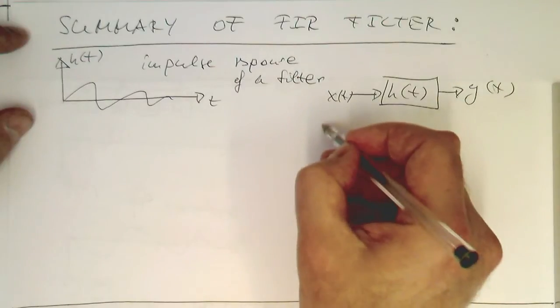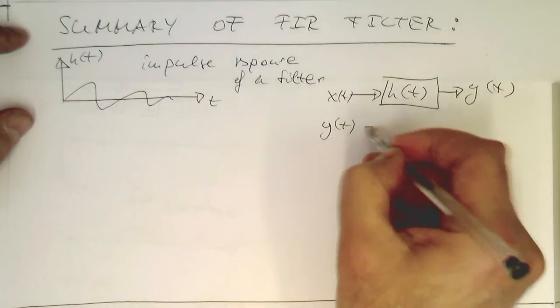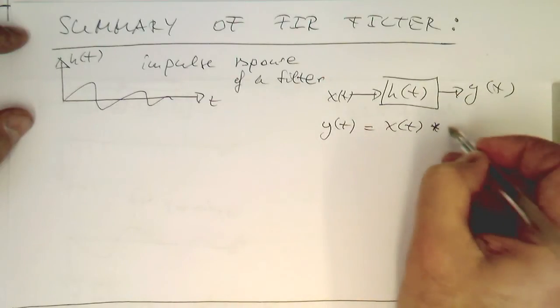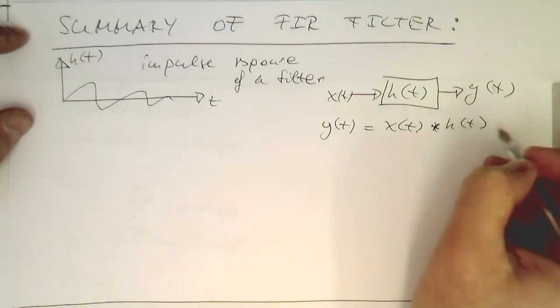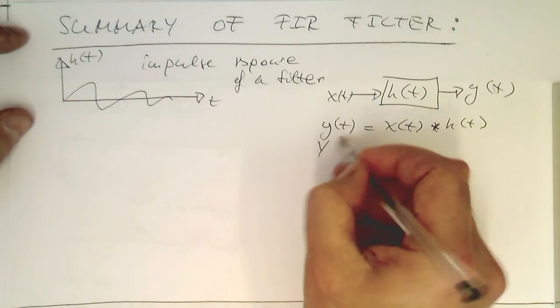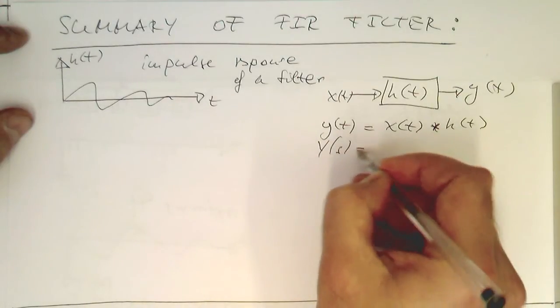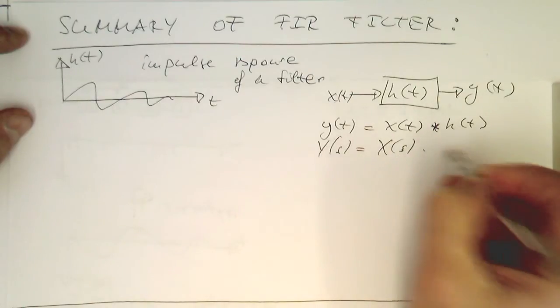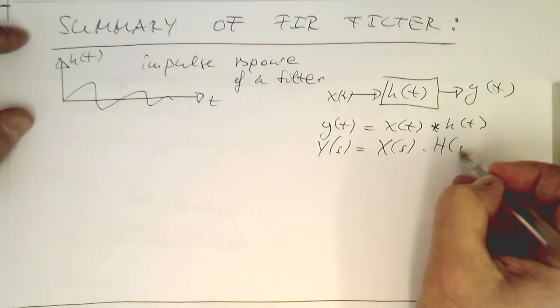We know that Y is calculated by X convolved with H. And we know that Y is X multiplied by H.